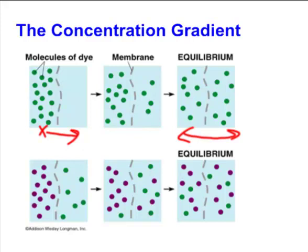A little refinement: it doesn't matter if you have different types of particles. If I have purple particles on one side and green particles on the other, notice that they both distribute themselves independently. The purple ones organize themselves across both sides, and so do the green ones. In other words, each type pays no attention to the other — they're only concerned about their own concentration. Eventually you end up with both the purple and green particles evenly distributed according to their own concentration.